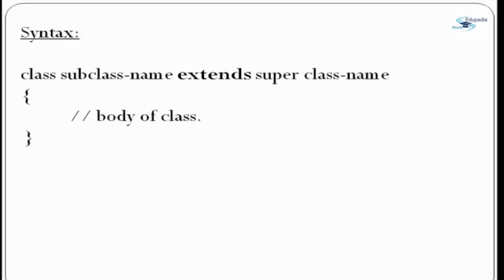This is the syntax: there is a subclass name and it extends the superclass name. For example, there could be a class 'SalariedEmployee extends Employee'. So 'Employee' is your superclass, and in a real-life example, what can a salaried employee inherit from the class employee?